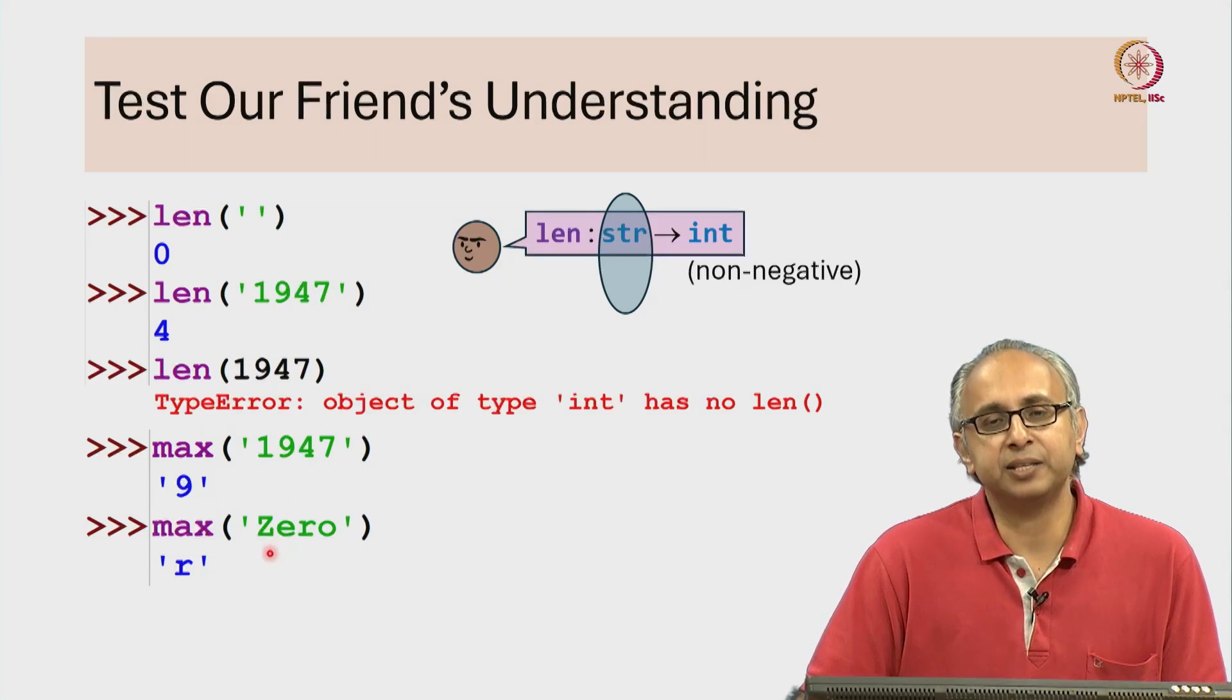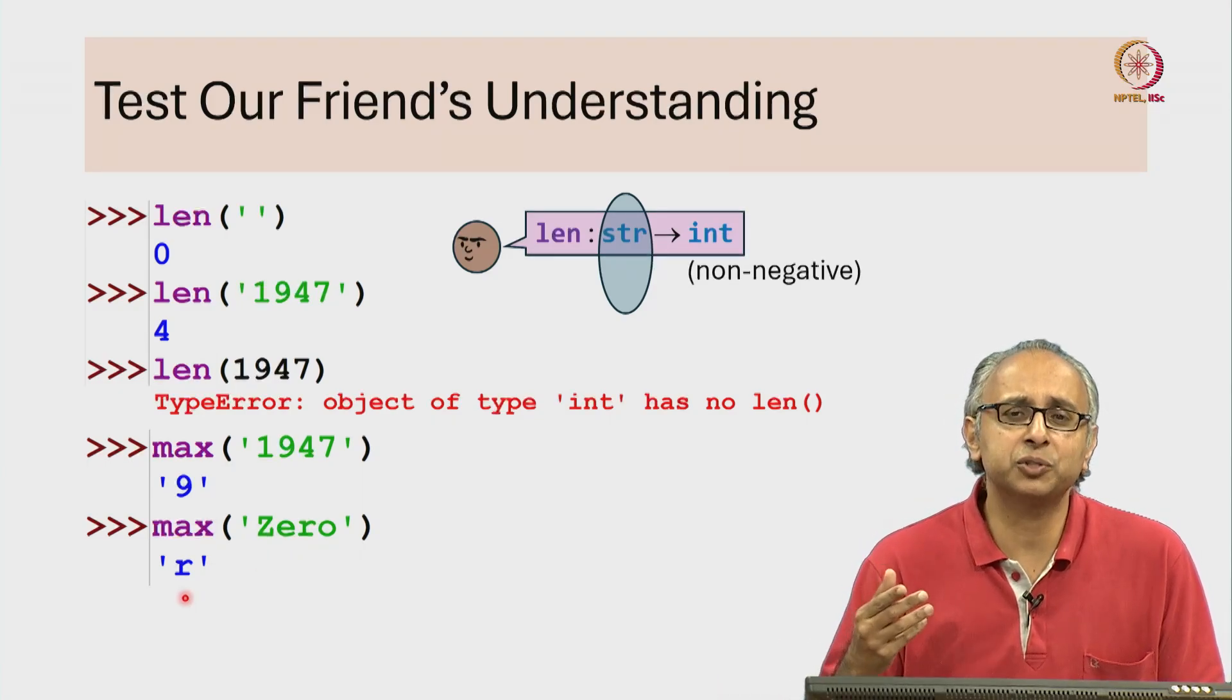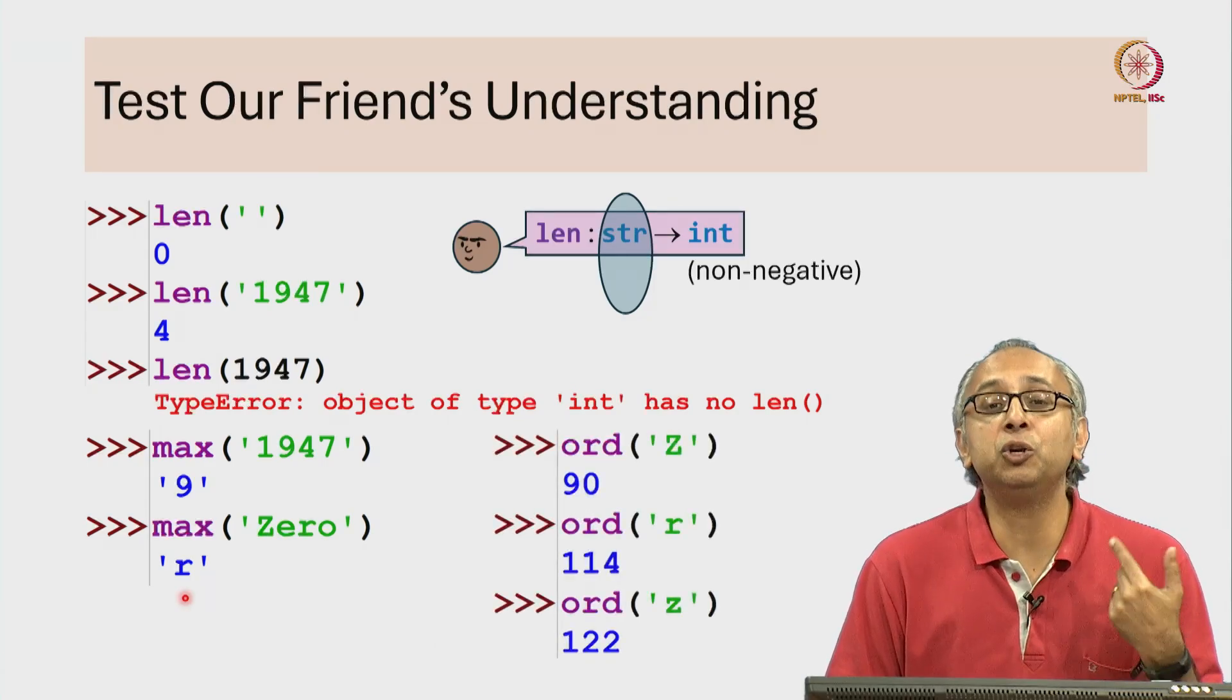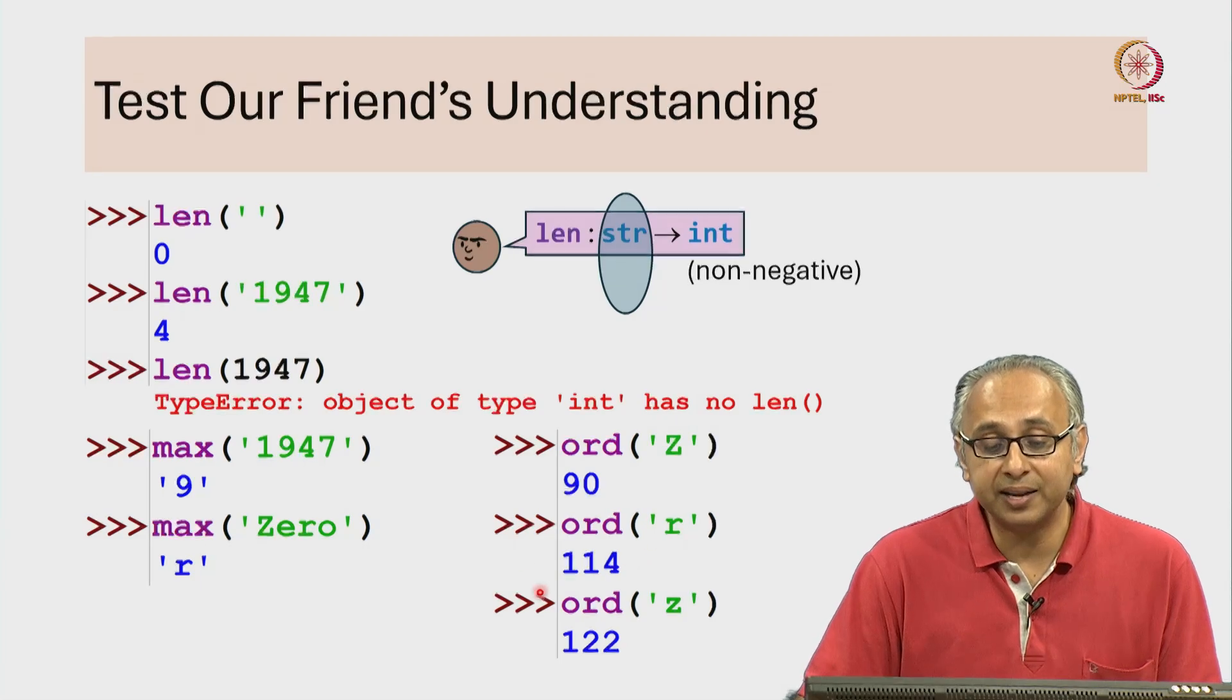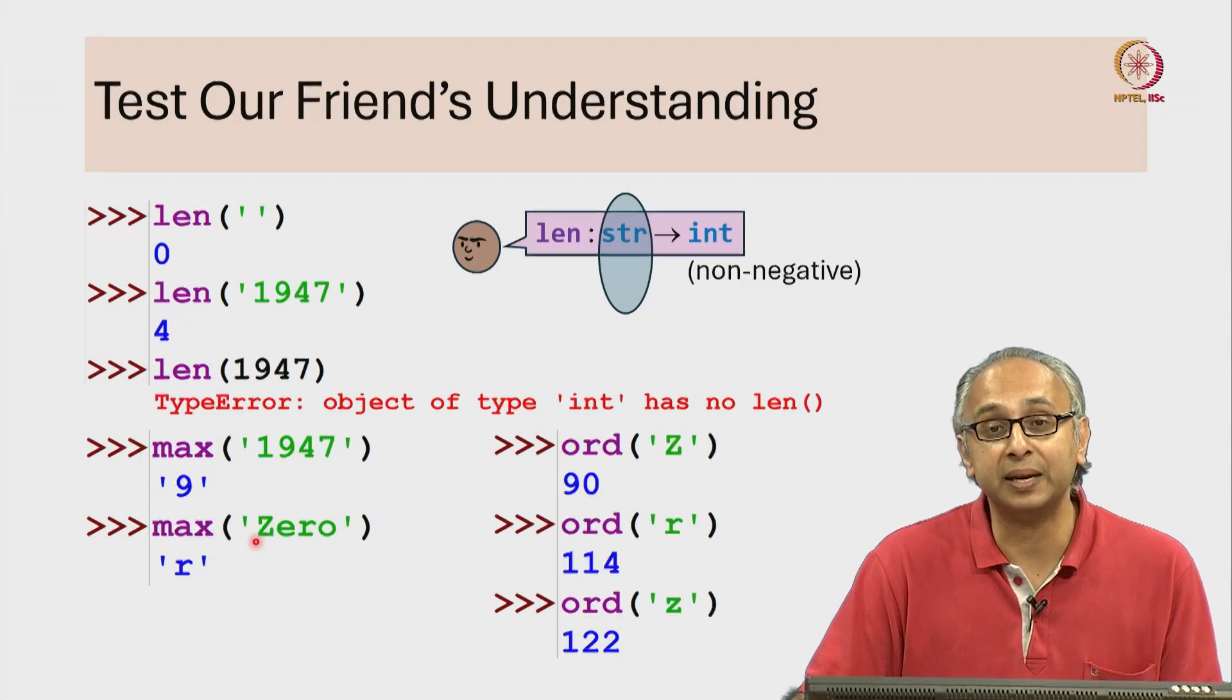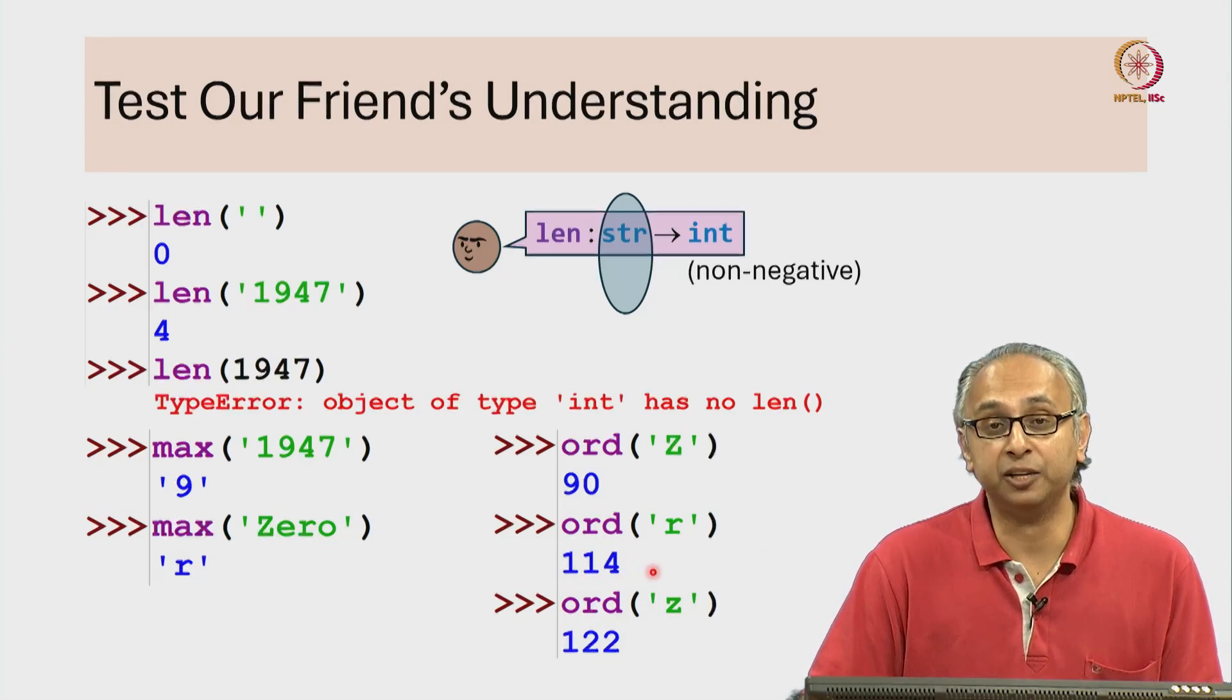You might be surprised that if I give it the string Zero, it doesn't return z as the biggest letter, it returns r. If you are curious why that happens, remember that internally every letter is represented as a number. If you calculate the ordinal values using the built-in ord function of capital Z and little r, you will see that little r has a larger ordinal value than capital Z. That is why in this string that starts with a capital Z and has an r in it, the r is the letter with the highest value. So that is the maximum.